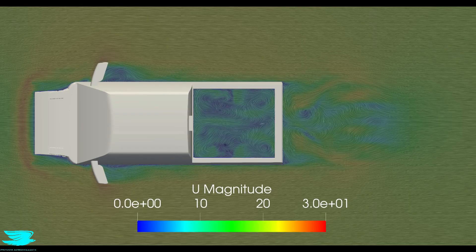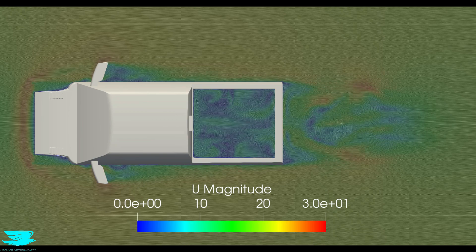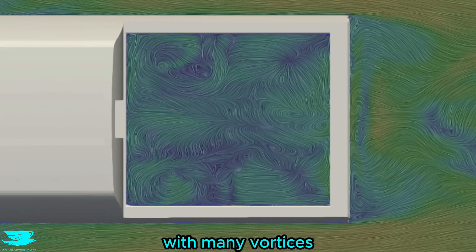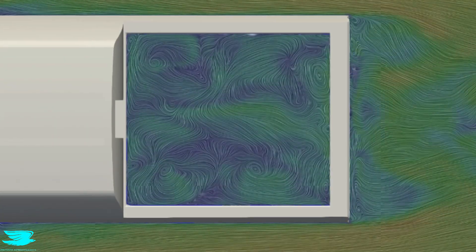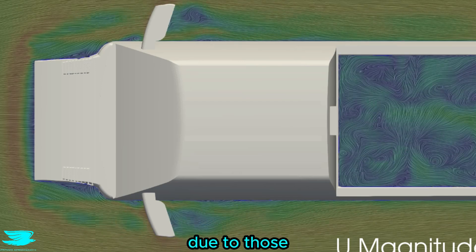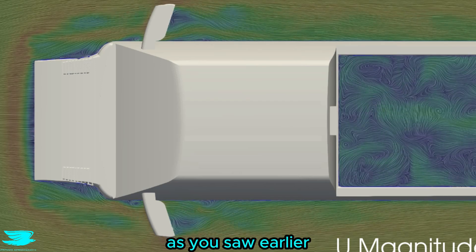Looking from on top, we see that the wake isn't that bad for such a large car. The flow in the bed is also chaotic, with many vortices forming as you'd expect. The flow separates around the cab, which is partly due to those streamlines flipping to around the side as we saw earlier.